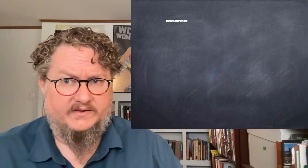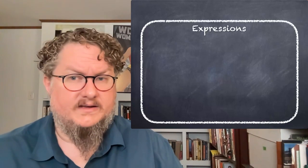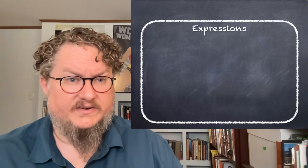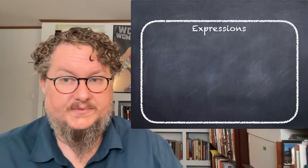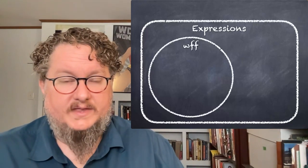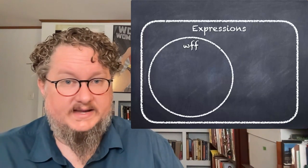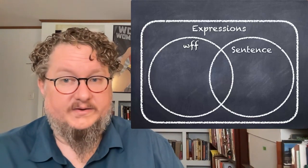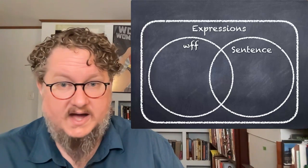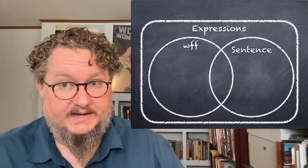It's a little bit different here. So the broadest category is expressions. That's any of the symbols of QL in any order. Then we have the well-formed formulae as a subset of expressions. The sentences are also a subset of expressions, but they're not completely overlapping in either direction.